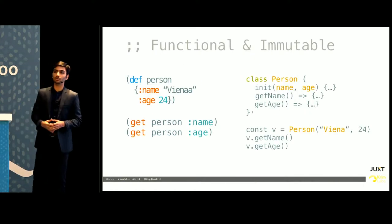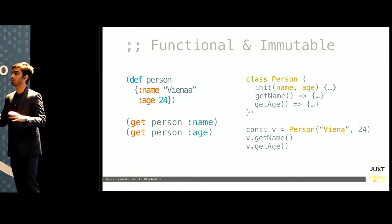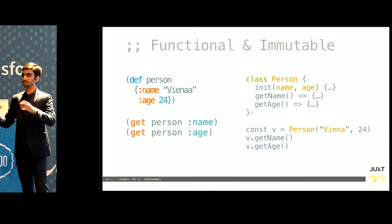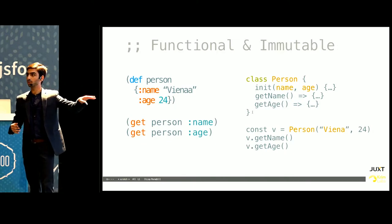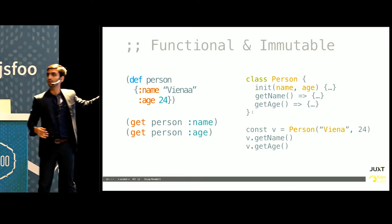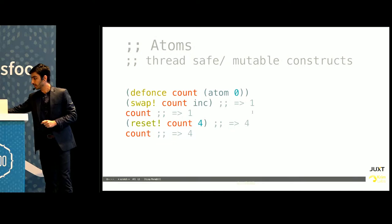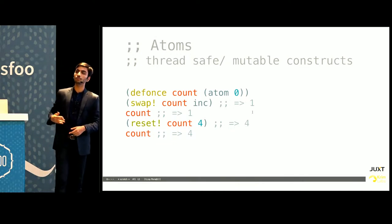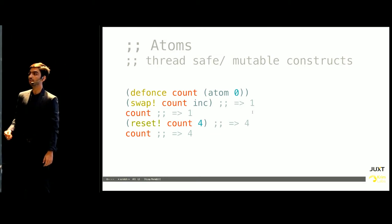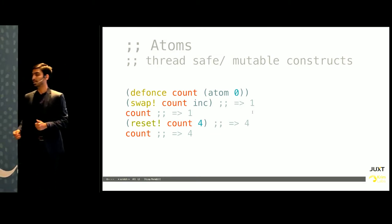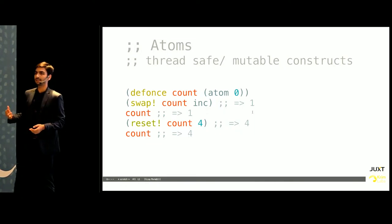Clojure is functional and immutable, which means once you have defined a data structure, you cannot change it at runtime. Instead of wrapping your data inside states and objects and exposing DSLs on top of it, you just talk to your data directly using the language's native APIs. And in cases where you want to mutate data — like form state — you use thread-safe constructs called atoms, which let you safely update the state of any data structure: strings, maps, anything you can think of.